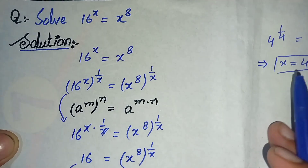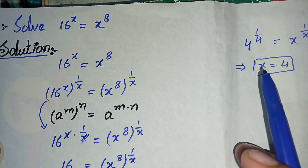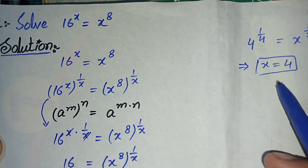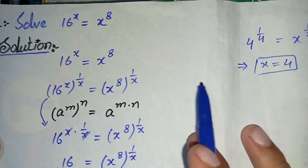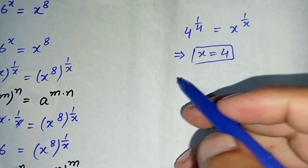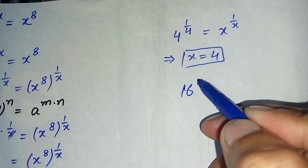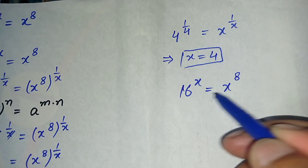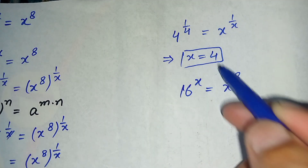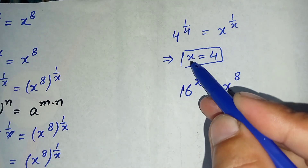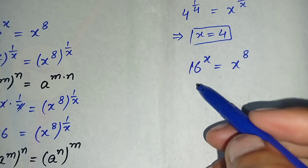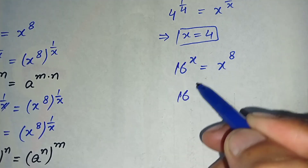So x equals 4 is the answer to this viral Math Olympiad question. Now we will verify that x equals 4 is the correct root. We substitute this value back into the original equation: 16 raised to power x is equal to x raised to power 8. Putting x equals 4 on both sides, it becomes 16 raised to power 4 is equal to 4 raised to power 8.